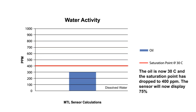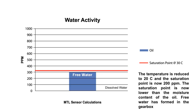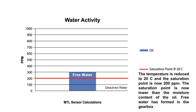When the oil is cooled, the saturation point drops. At 30 degrees Celsius, the saturation point is now 400 ppm. The sensor would display a reading of 75%.